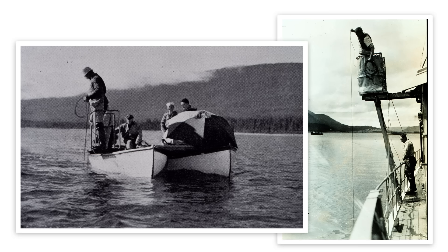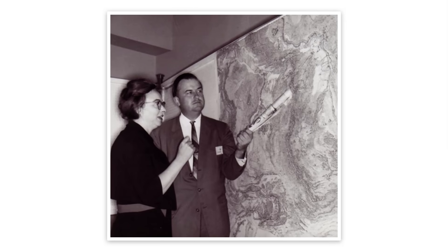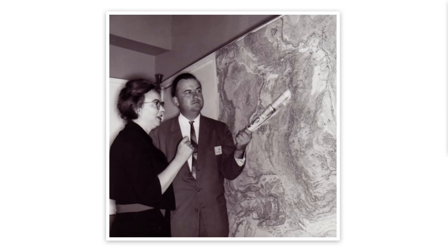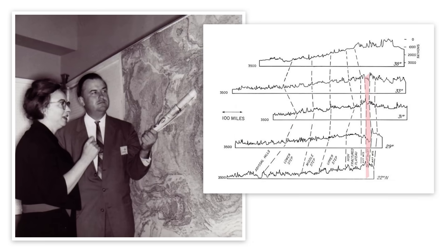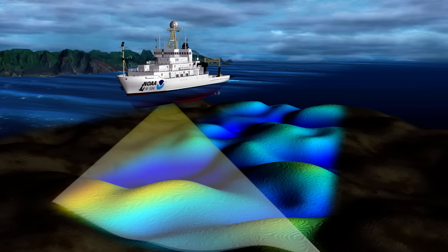As World War I ended and then World War II came about, the United States launched a Department of the Navy Office of Naval Research, and for the first time, science was driving an effort to map the ocean floor. Scientists Marie Tharp and Bruce Heezen developed the first bathymetric map of the Atlantic Ocean in the 1950s. They used a technology known as sonar to accurately map the depth of the sea over large areas, creating a map that was the most accurate of its time.